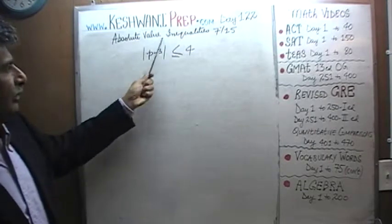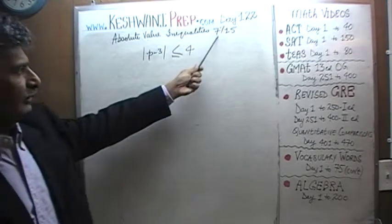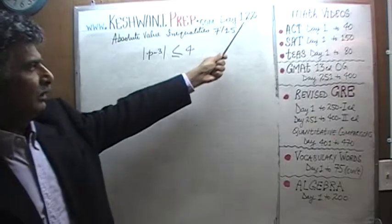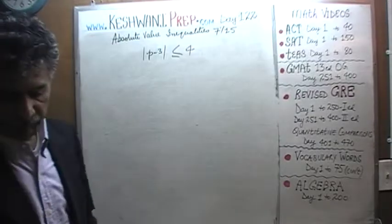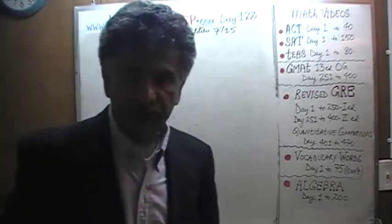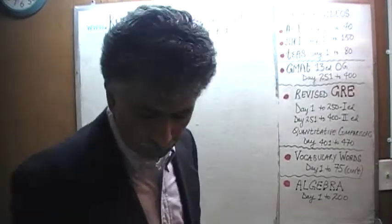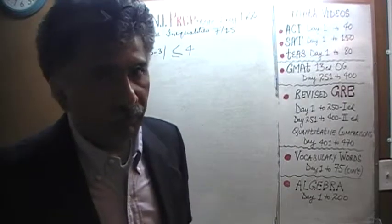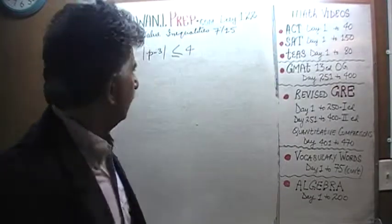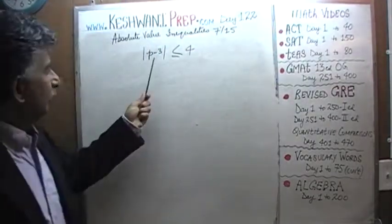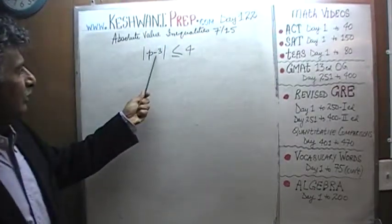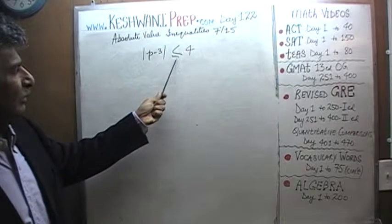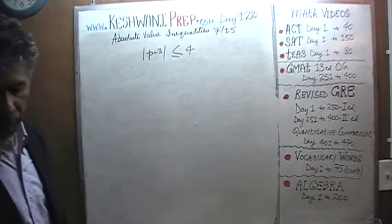Absolute value inequalities — the seventh video in the series of 15, and today happens to be our lesson number 122. The problem for today is already on the blackboard. We are told that the absolute value of P minus 3 has to be less than or equal to 4.